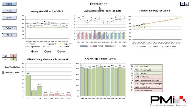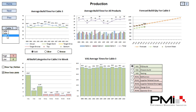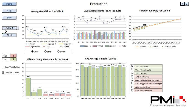On this production sheet we're looking at a number of different metrics for a particular product, in this case Cable 3. So we've got average build time for Cable 3, forecast build time Cable 3, all build categories for Cable 3. Now that can be changed using the drop-down box. If we click on this list here, we can pick any one of these three products that we're currently measuring. So if I choose Cable 1,